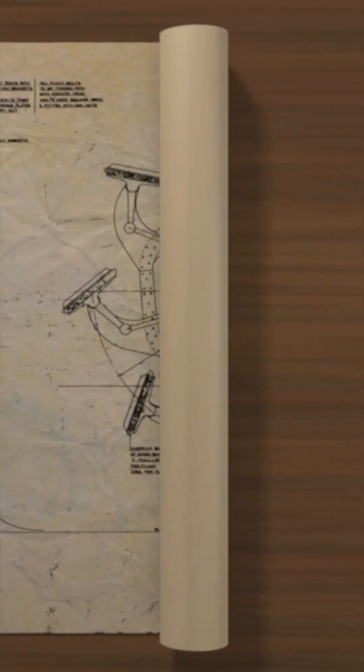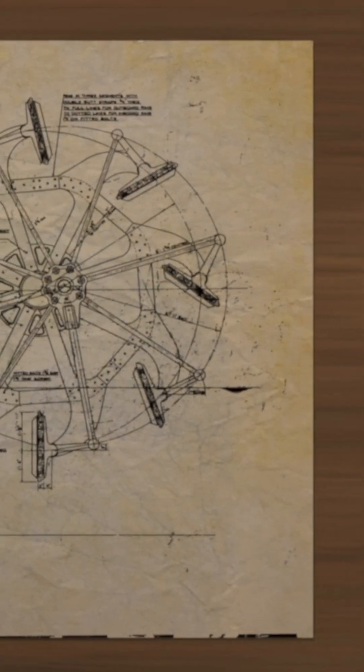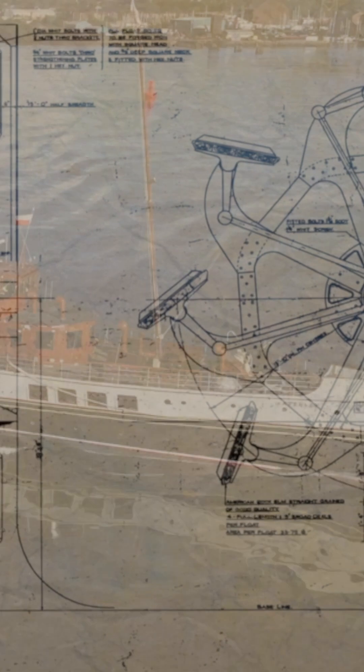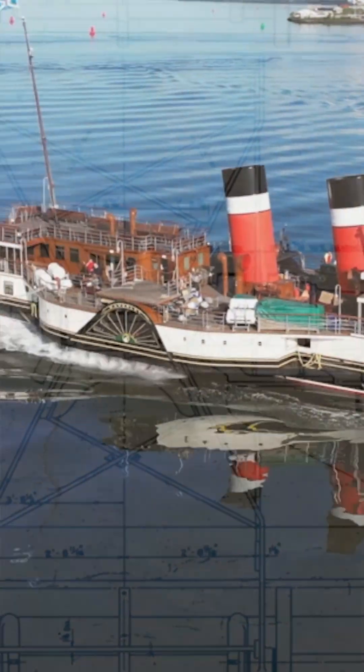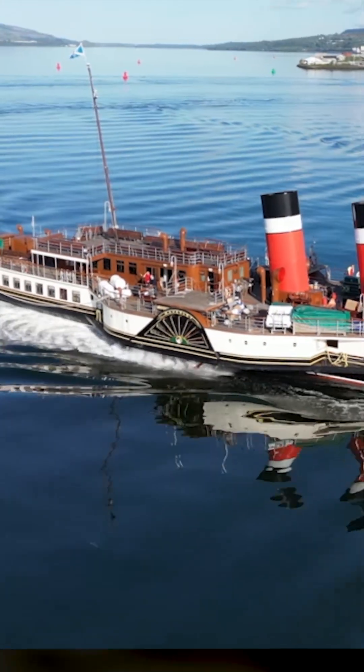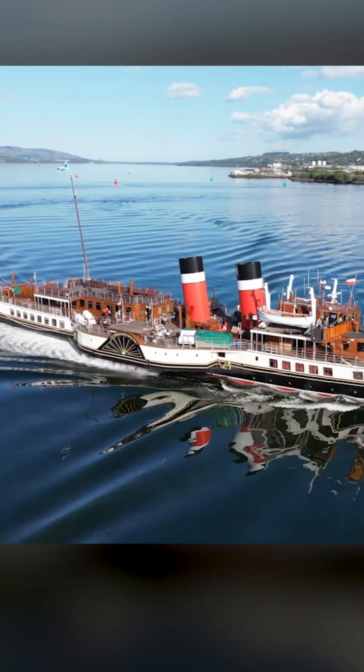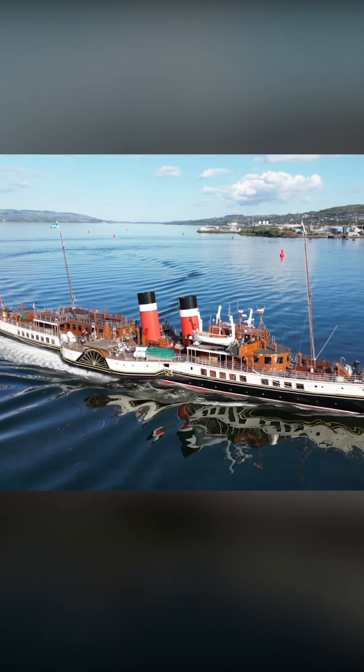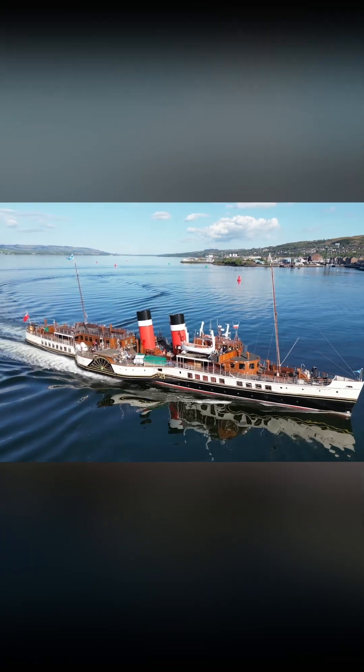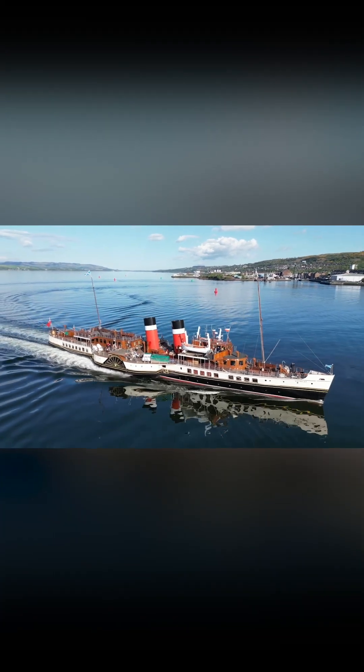This is a technical drawing of the paddle wheel of the Waverley, the world's last seagoing, passenger-carrying paddle steamer. She was built in 1946 for the London and Northeastern Railway to provide a maritime link between rail stations around the Firth of Clyde.